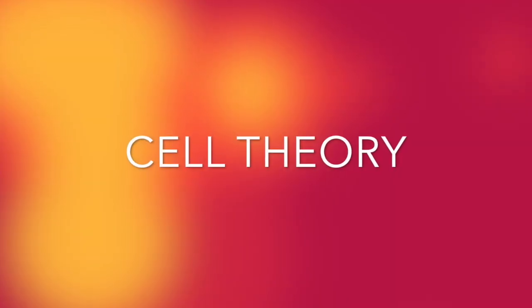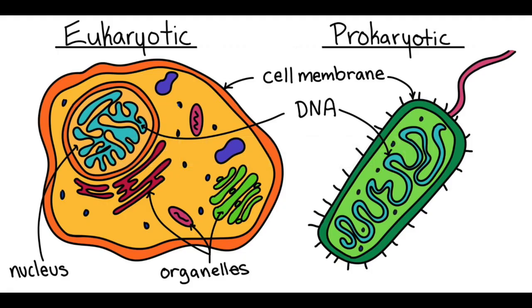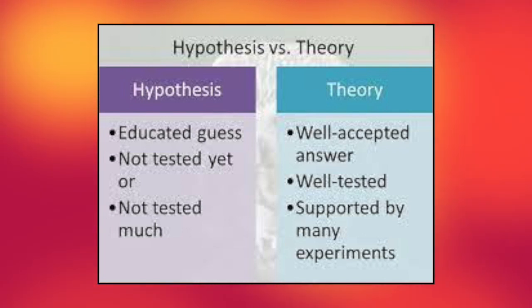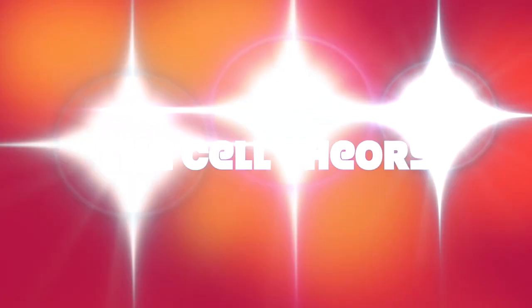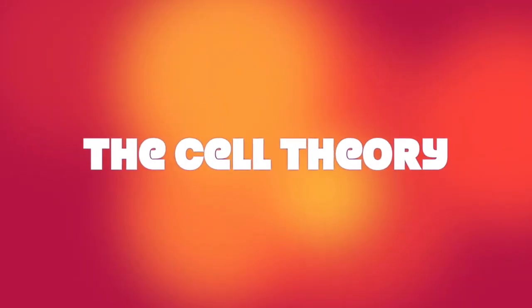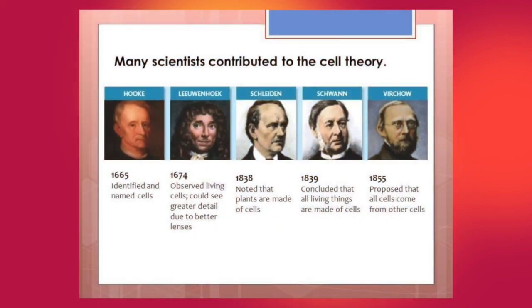Remember the cell theory? It's kind of a big deal. Theories are a big deal in science because they confirm a certain hypothesis over and over again. The cell theory took over 200 years to be complete and it involved many different scientists and many different types of technology.